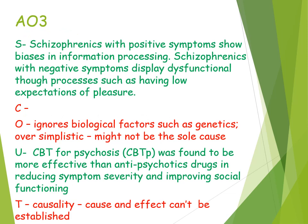A strength of the cognitive explanation is that positive symptoms can be explained in terms of faulty cognition. Schizophrenics with positive symptoms show biases in information processing, whereas schizophrenics with negative symptoms display dysfunctional thought processes such as having low expectations of pleasure. This strengthens the theory because it offers a comprehensive explanation of schizophrenia.